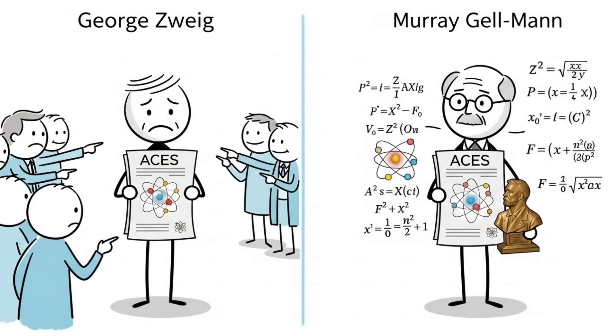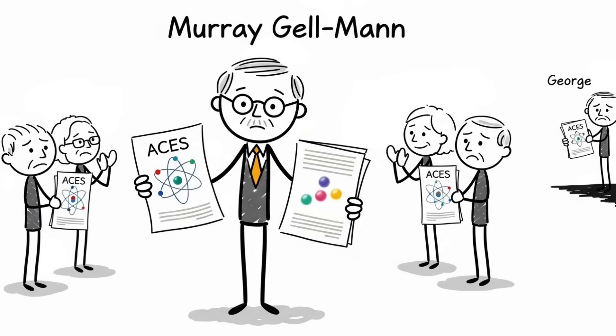Meanwhile, Murray Gell-Mann suggested the same idea using fancier math and won the Nobel Prize. Zweig was pushed aside while others got the fame and credit for his discovery.